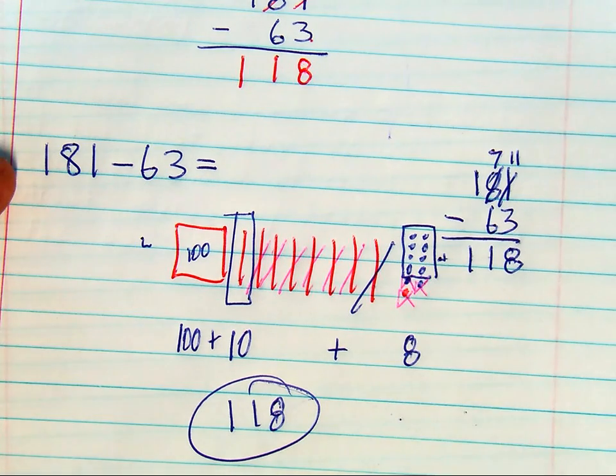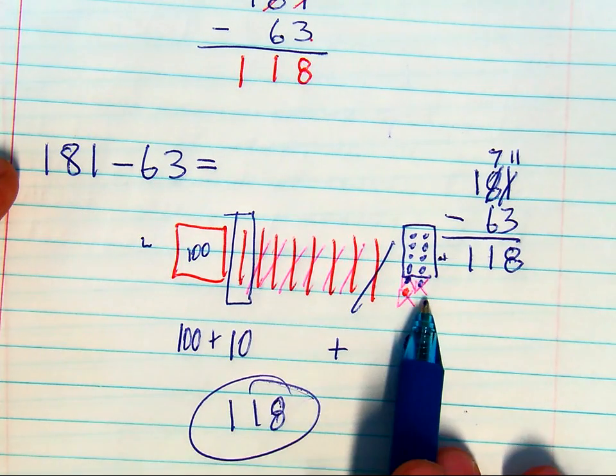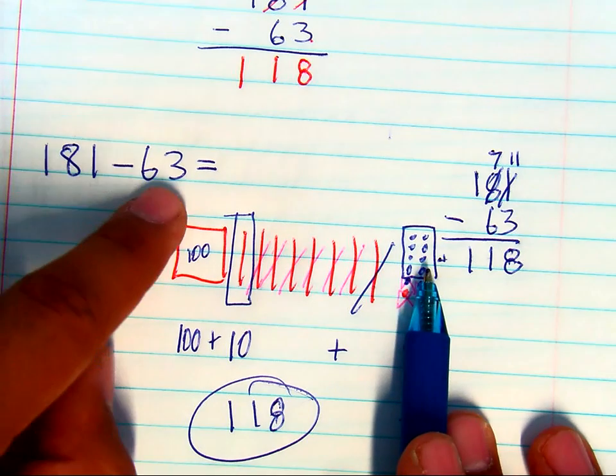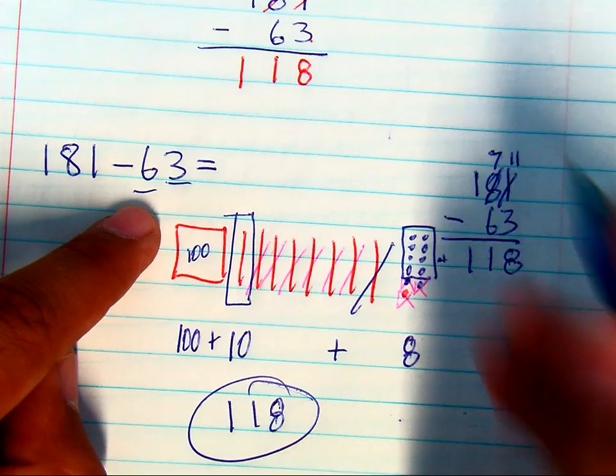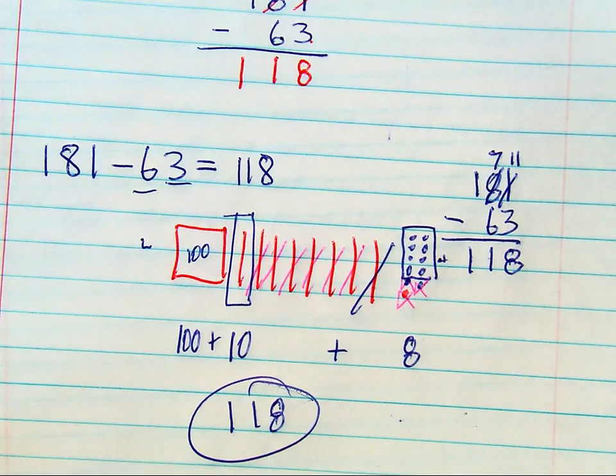So please have your students practice modeling each number, breaking the 10 apart, and then subtracting the ones place and the tens place to get your answer, 118. I know it's a lot of work, but it's going to be worth it in the long run if you take the time now.